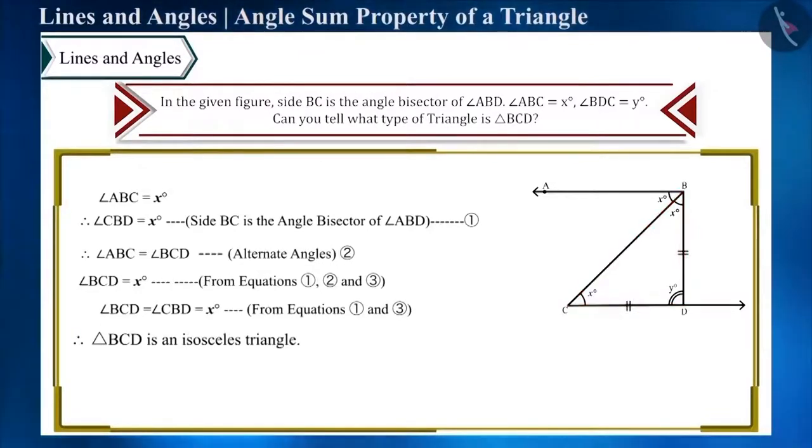Correct? Friends, there is an error in this answer. We said that angle ABC is equal to angle BCD because they are alternate angles, but have we been given that the side AB and side CD are parallel sides?